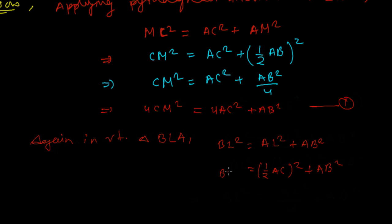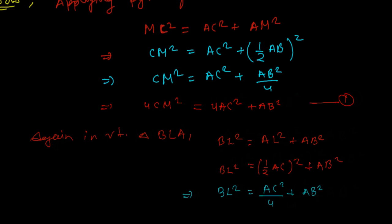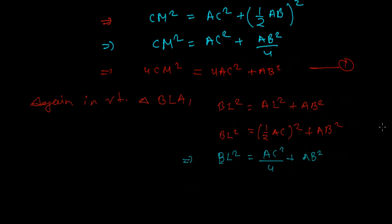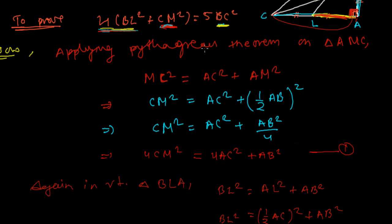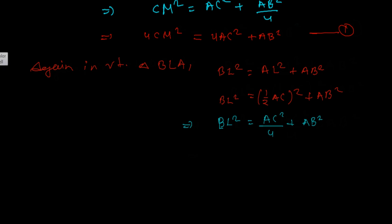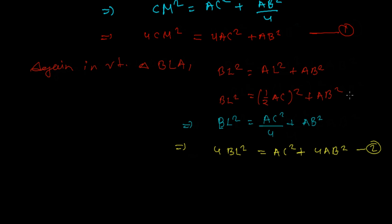So BL² = (AC/2)² + AB² = AC²/4 + AB². Multiplying both sides by 4 gives 4BL² = AC² + 4AB². Let's call this Equation 2.